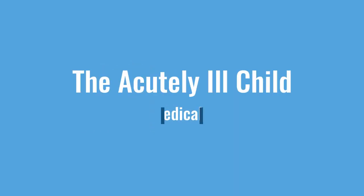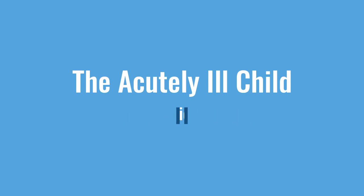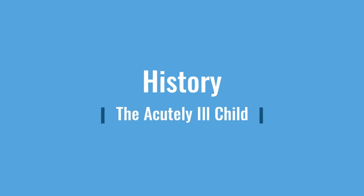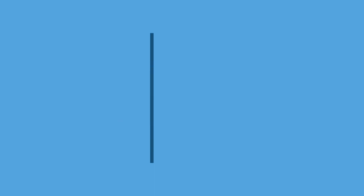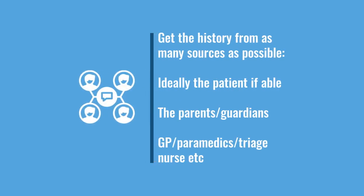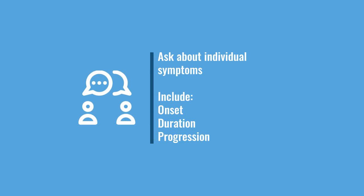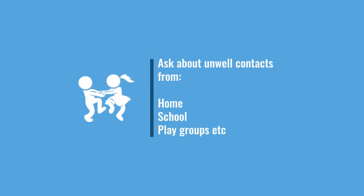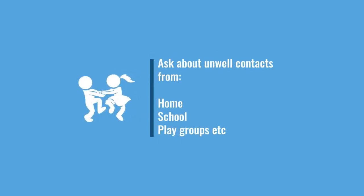Let's think about the history we might want to get from that patient. You want to get your history from as many sources as you can — from the child if possible, or from their parents, GP, paramedic, or triage nurse. You're looking at their symptoms, the duration and progression: has it happened very quickly or over a longer period? How long have they been unwell? Are they getting better or worse? Have they got any unwell contacts or family members with similar symptoms?